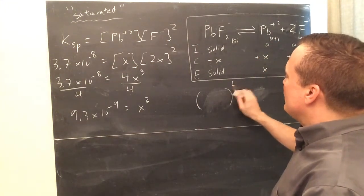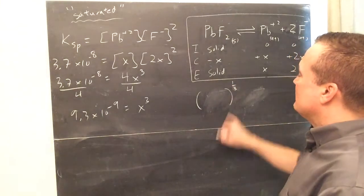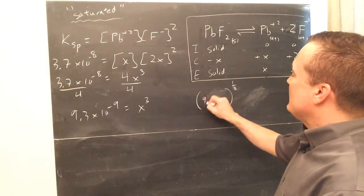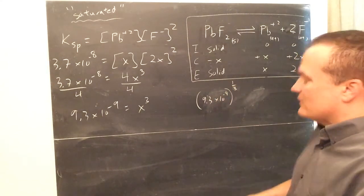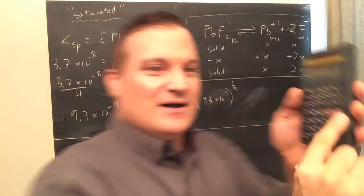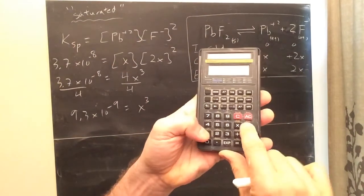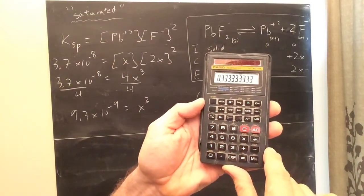Well, if you do the cube root, you're raising it to the 1/3 power. So, 9.3×10 to the negative 9, raised to the 1/3 power. Well, on your calculator, 1/3 is 1 divided by 3, which is 0.333333333333.